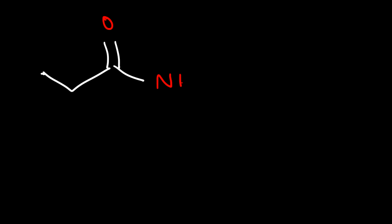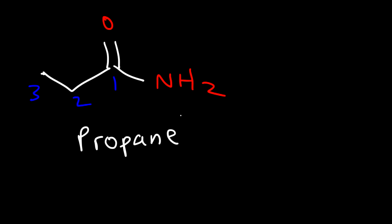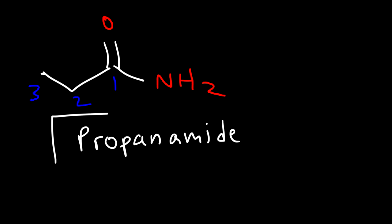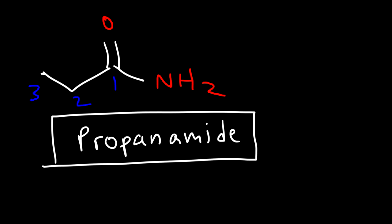Based on our last example, what is the IUPAC name for this particular amide? We have a total of three carbons, which is associated with the word propane, but we're going to drop off the E and add amide. So this is called propanamide.